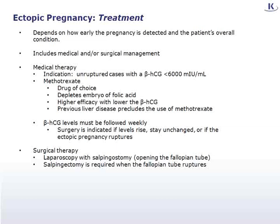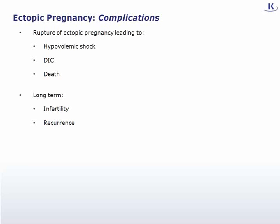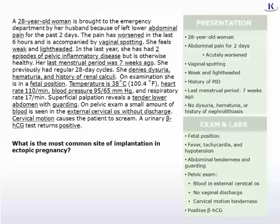Laparoscopy with salpingostomy — the opening of the fallopian tube without its removal — has become the preferred method of surgical treatment. However, a salpingectomy (tubal removal) must be performed in the case of rupture. Rupture of an ectopic pregnancy can lead to hypovolemic shock, disseminated intravascular coagulation (DIC), and even death. Long-term complications include infertility and an increased risk of recurrence.